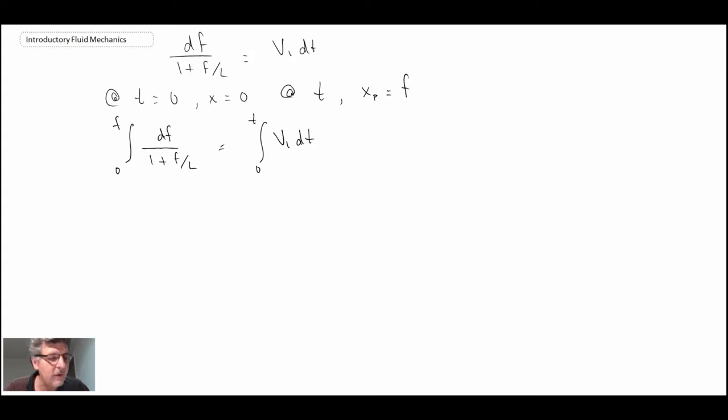And the way that we're going to go about doing this integral is we're going to use the substitution method. And so what we will do, we'll sub in little u for 1 plus f over l. And then we can write du by df is 1 over l. And from that, we can write du is equal to df over l.